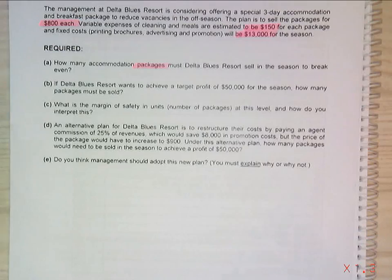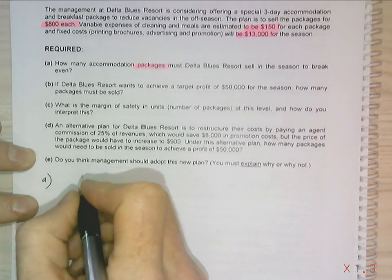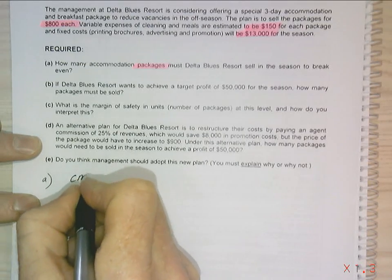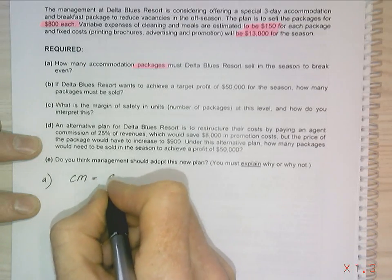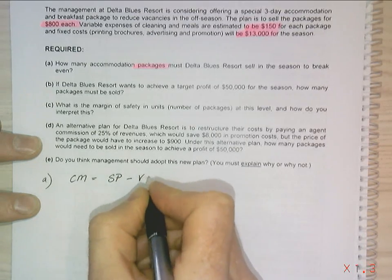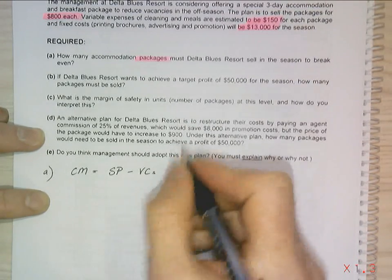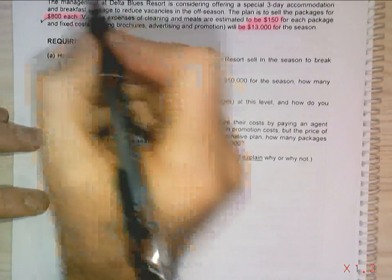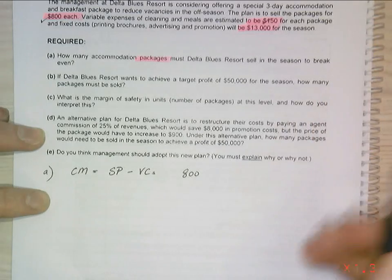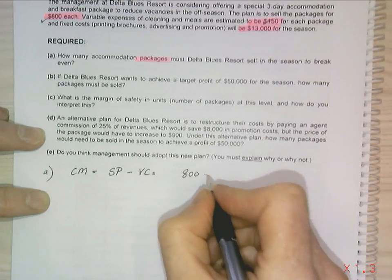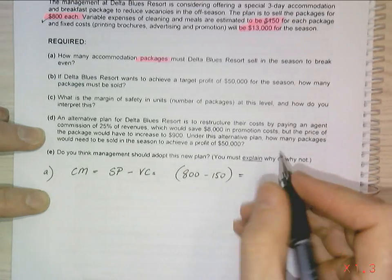Alright, so the first thing we need to do is calculate break even. So I'm doing question A. Before I even calculate my break even I need to work out what my contribution margin is. My contribution margin equals my selling price minus my variable costs. That equals my selling price of $800. So I've got $800 minus $150, and that gives me $650.